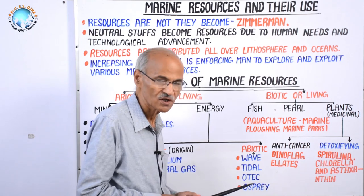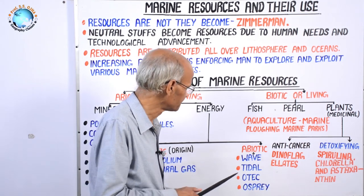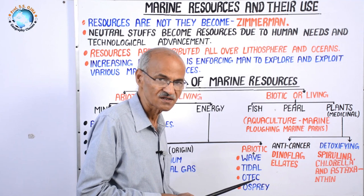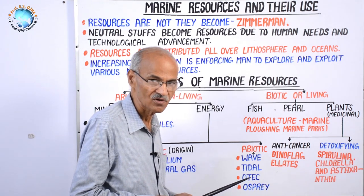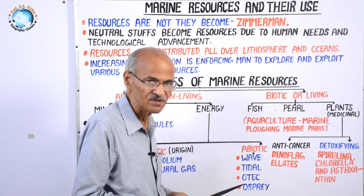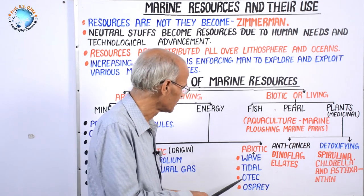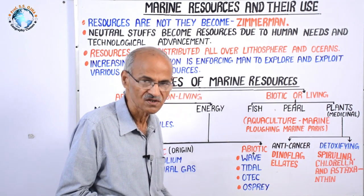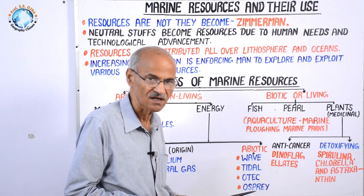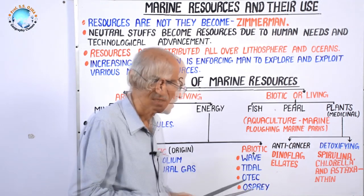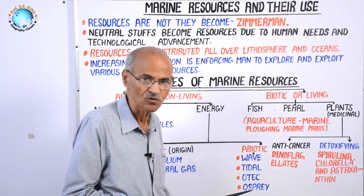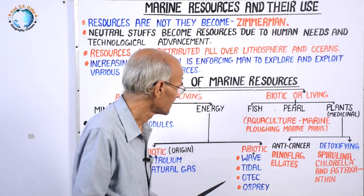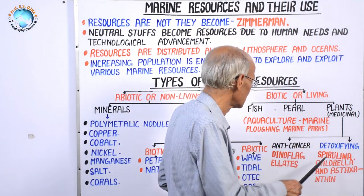OTEC energy is largely found in the tropical and subtropical region, where there is an epilimnion, hypolimnion, and thermocline layer, which we have studied separately in other videos. There is good scope of OSPREY energy, on which countries like Scotland and others are doing research. OSPREY, like OTEC, will also prove to be a renewable and important oceanic energy.